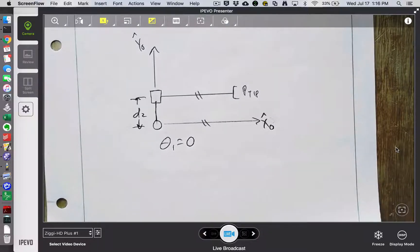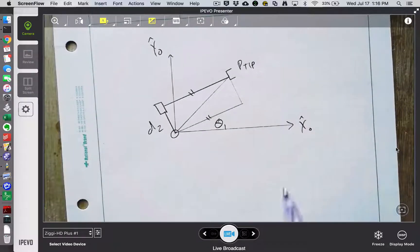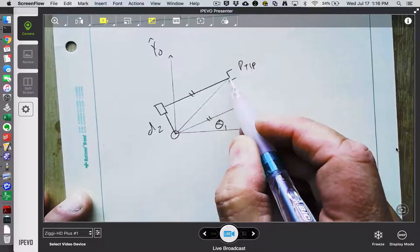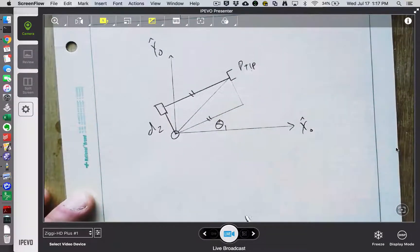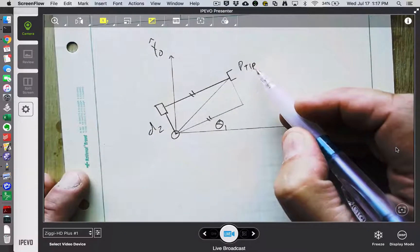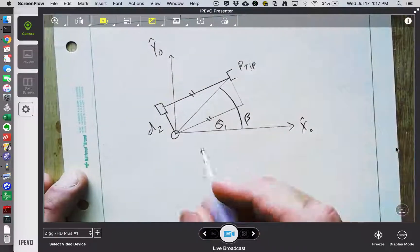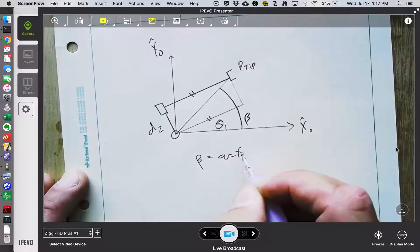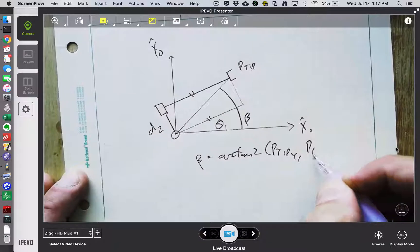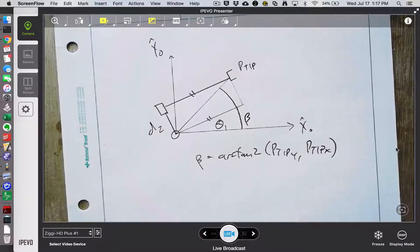So what's going to happen is if I rotated this, so theta 1 was non-zero, and if I knew my P-tip coordinates, I'd end up with this picture. D2 going this way, some other radius going that way, and if I just took the inverse tangent of P-tip X, P-tip Y, what I would actually be finding is this angle that I'm going to call beta. So beta is arctan2 of P-tip Y comma P-tip X, but beta is not equal to theta.